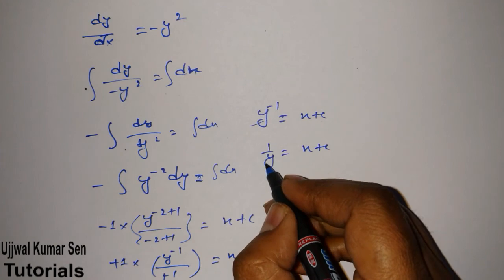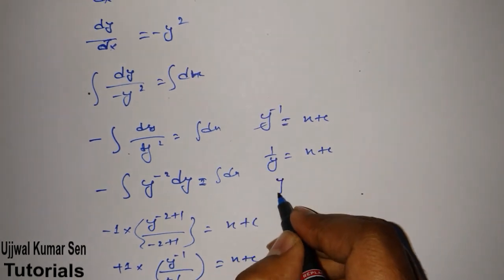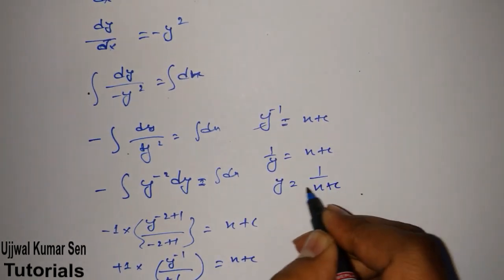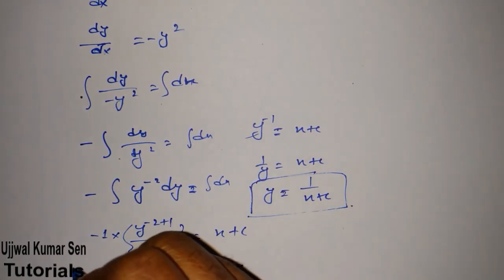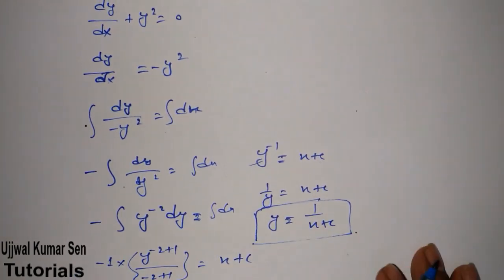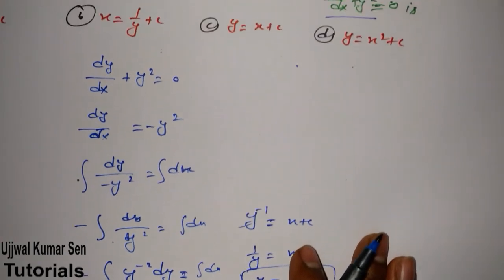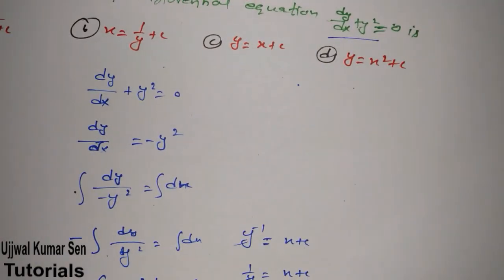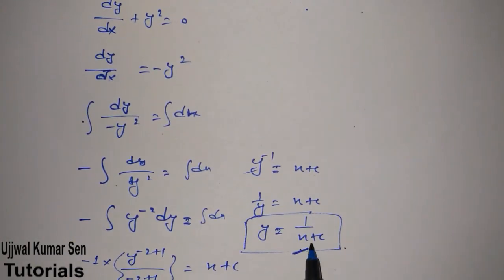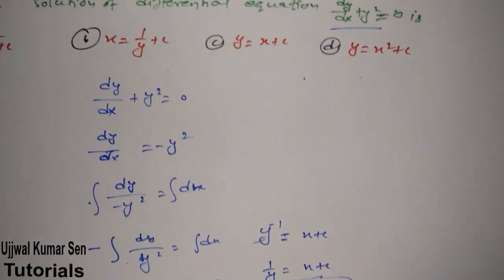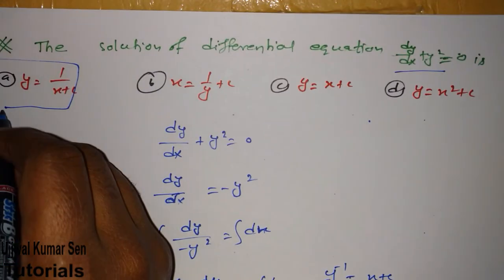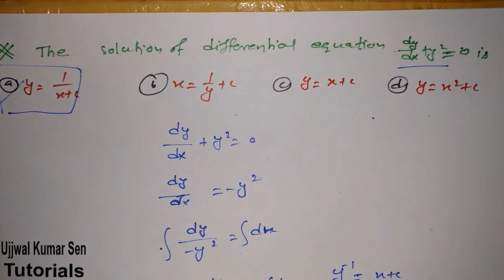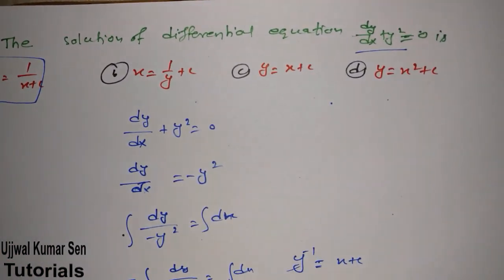y⁻¹ is the reciprocal of y, so 1/y = x + c. Sending y to the other side: y = 1/(x + c). This is the solution of the given differential equation — option A is the right answer for this question.